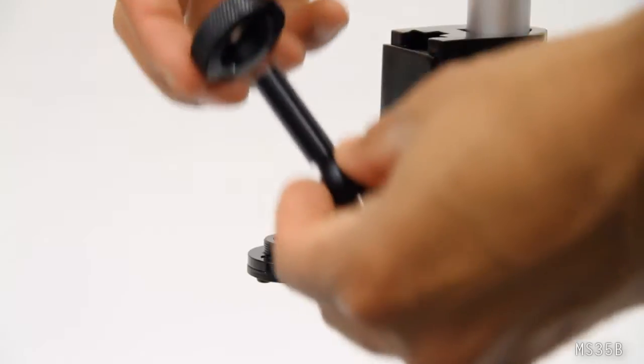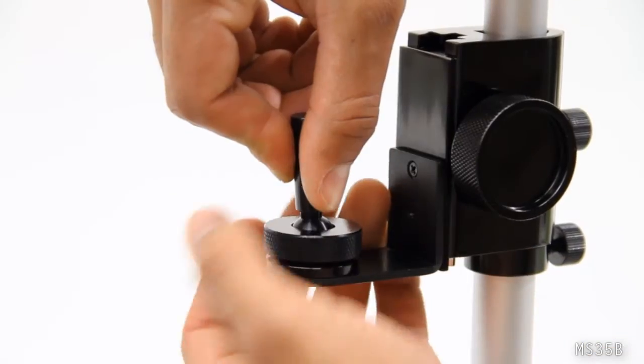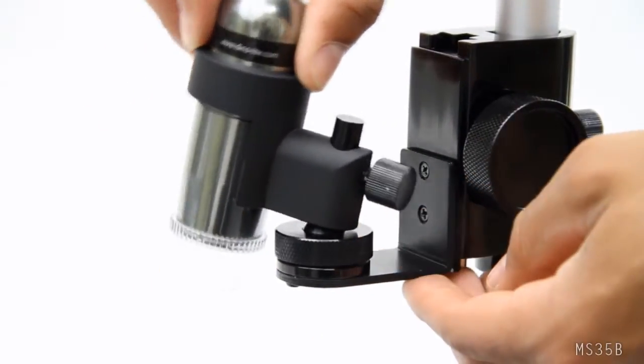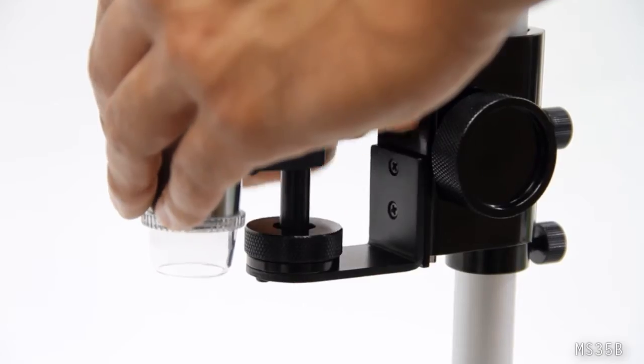The MS-35B includes two interchangeable block posts: one that pivots for added angle adjustment and a rigid post for straight on vertical viewing.